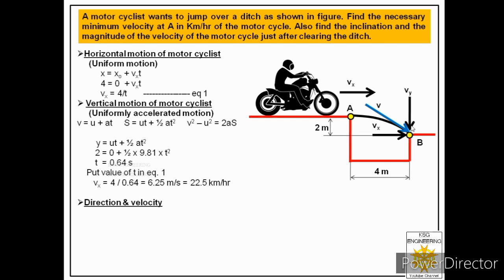To find vy, the final velocity of the projectile in the y direction, we use v = u + at. Here u is the initial velocity in y, which is zero since the motorcyclist was traveling in the x direction only; a = g = 9.81 m/s²; and t = 0.64 seconds. So vy = 0 + 9.81 × 0.64 = 6.27 m/s.